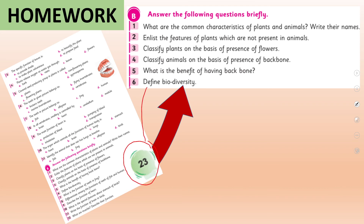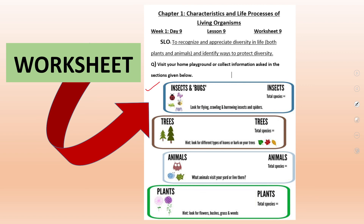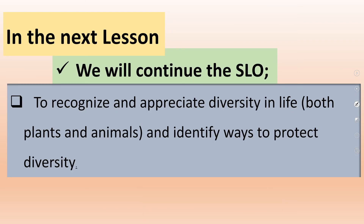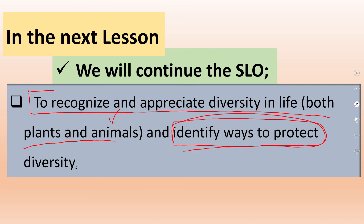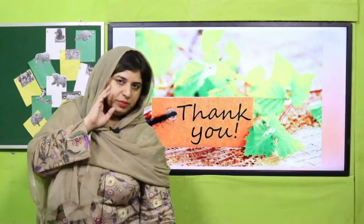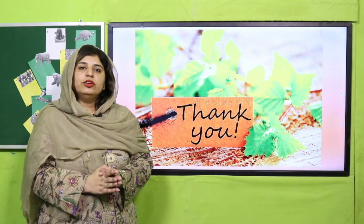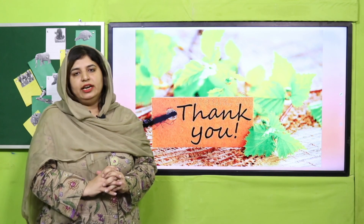In your book on page number 23, question number 6 from part B, you have to write a brief answer: what is meant by biodiversity? A worksheet is also available — it is very interesting, so kindly students revise the lesson and follow the worksheet to make your concept clear about biodiversity. In the next lesson, we will continue and focus on ways to protect biodiversity — how can we save biodiversity for our future use and for the next generation. Till then, revise the lesson very carefully. Thank you so much, Allah Hafiz.